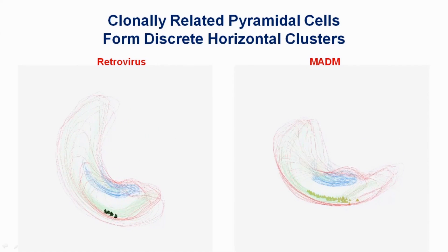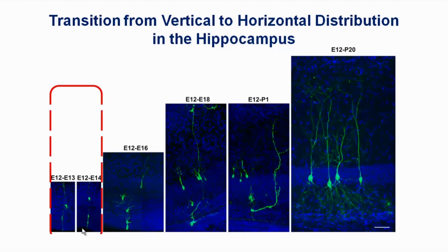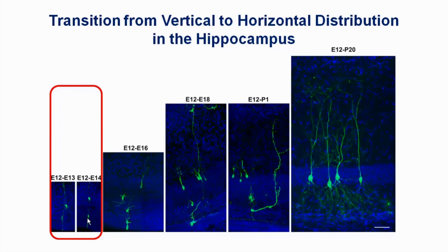Next, we followed the progressive development of this unique lineage distribution pattern. We found that during the early embryonic stage, before E16, the hippocampal clones are very similar to those in the neocortex — daughter cells are vertically aligned along the radial fiber of the mother progenitor cell.